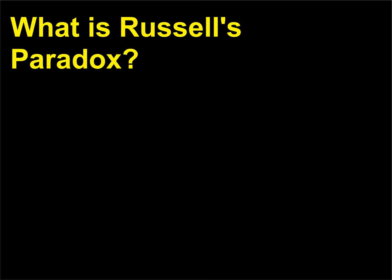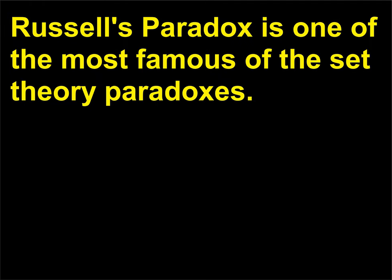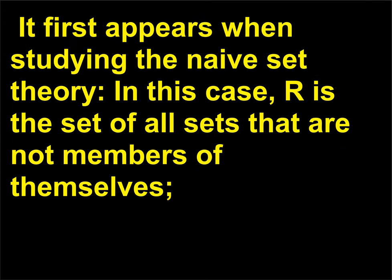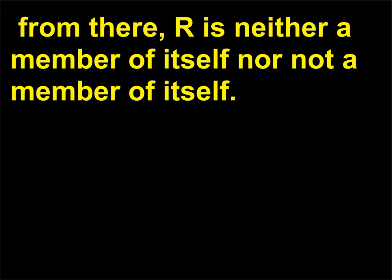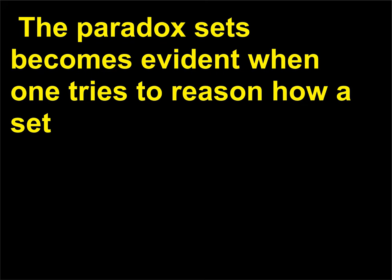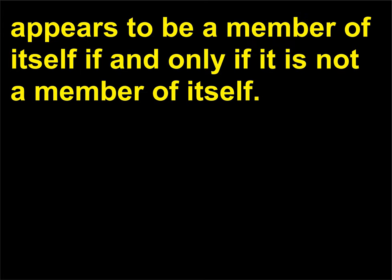What is Russell's paradox? Russell's paradox is one of the most famous of the set theory paradoxes. It first appears when studying naive set theory — in this case, R is the set of all sets that are not members of themselves. From there, R is neither a member of itself nor not a member of itself. The paradox becomes evident when one tries to reason how a set appears to be a member of itself if and only if it is not a member of itself.